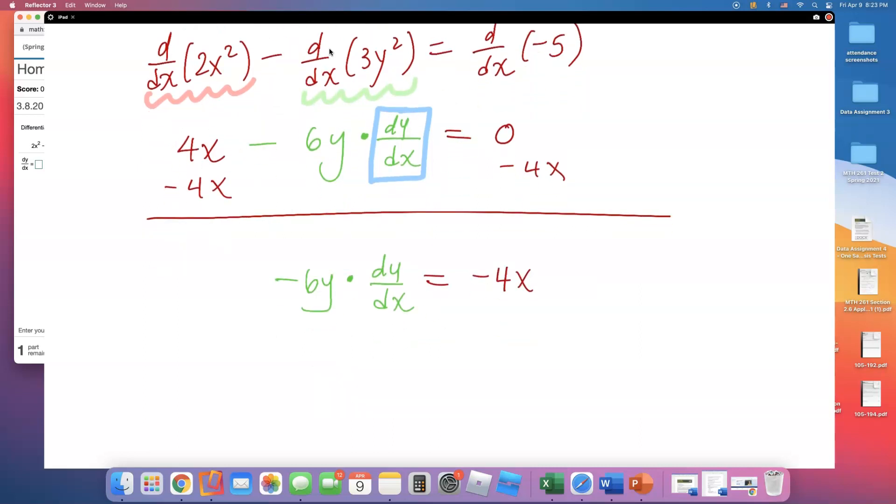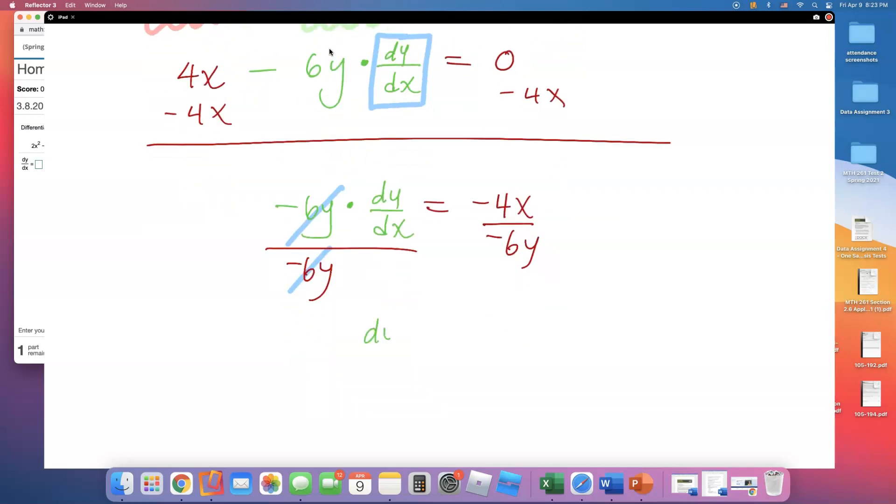Now, let's divide both sides by negative 6y. If I do that, that's canceled out. We have our dy/dx equals, well, we can at least simplify this fraction. Negative 4 over negative 6 is 2/3, right? So the answer is 2x over 3y.